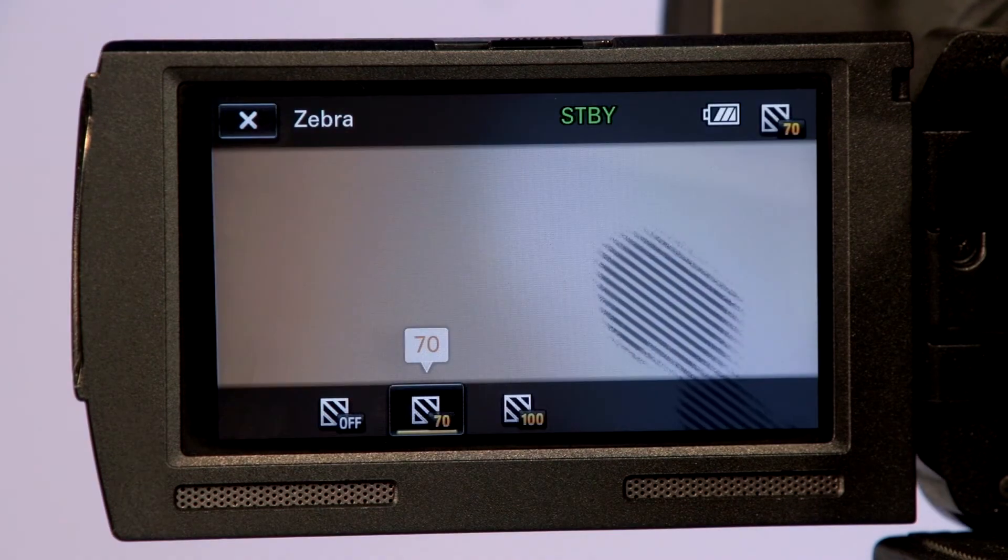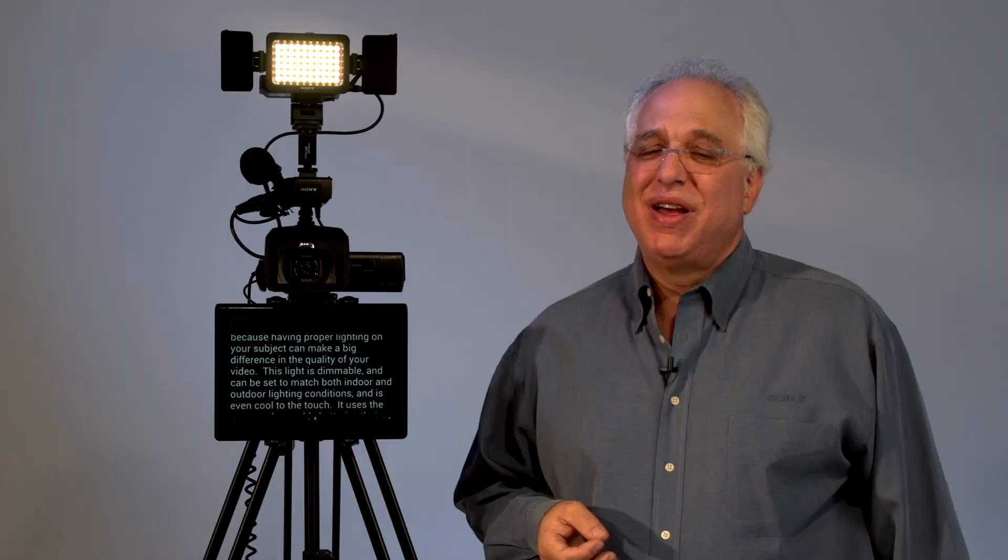Another important professional tool that's part of the NX30 are zebras. These are monitor-only displays that can be set to 70 IRE to alert you when you have overexposed an image for skin tone, or to 100 IRE for reference of maximum brightness. This allows you to better control your exposure, while making sure that your brightness levels are legal for broadcast.